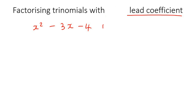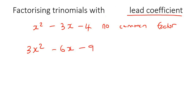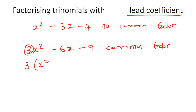That was no common factor. Then in the previous lesson, we looked at ones like 3x squared minus 6x take away 9. What we could do with these is take out a common factor — take out a 3 — because the number 3 can fit into all of these, and then you'd be left with something like that.